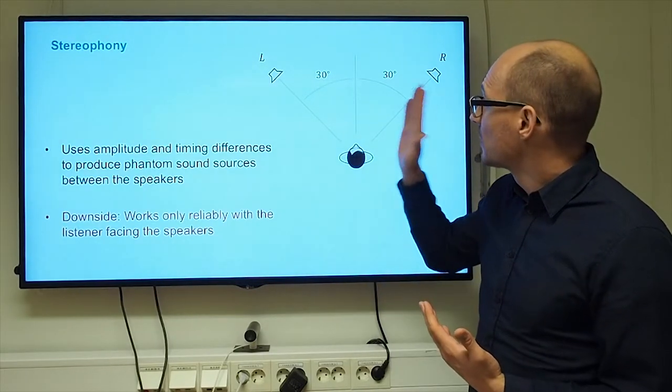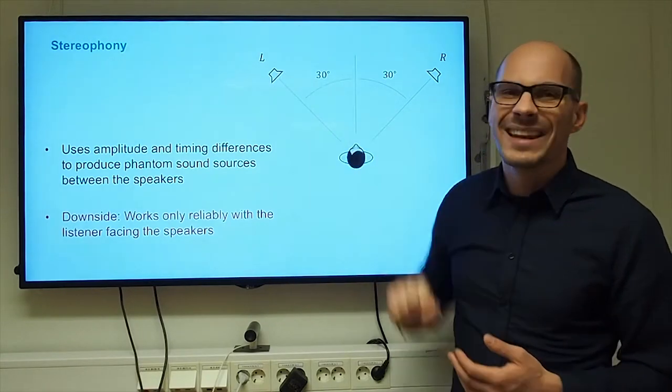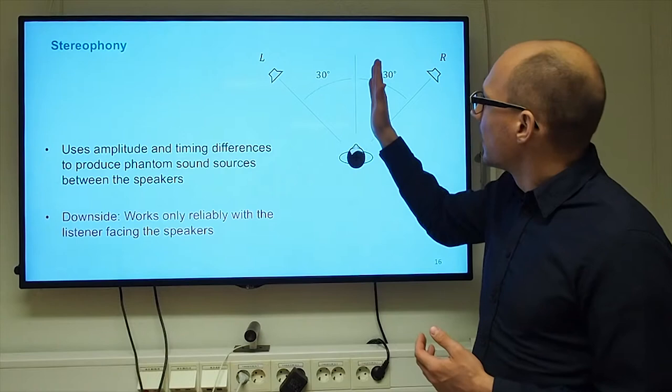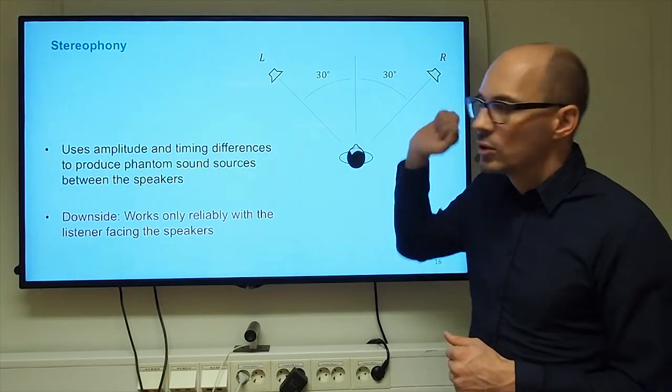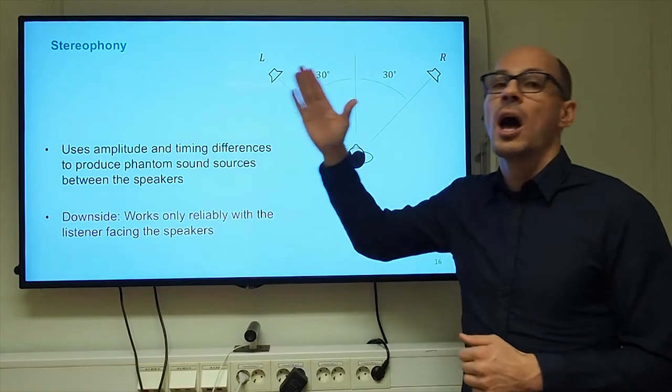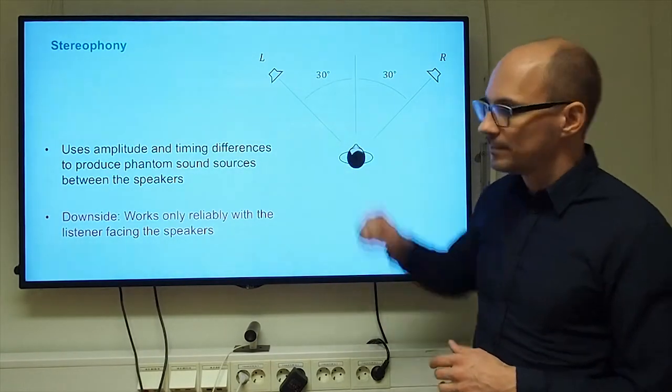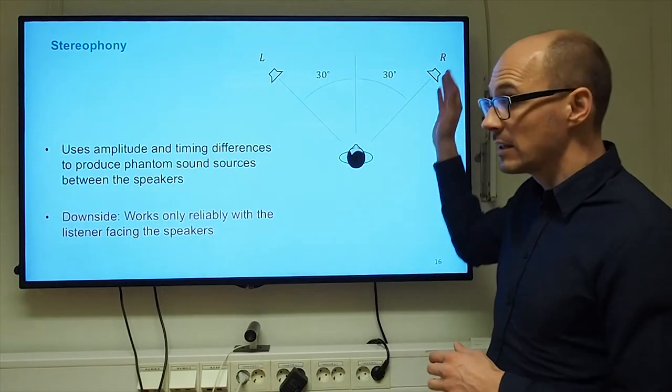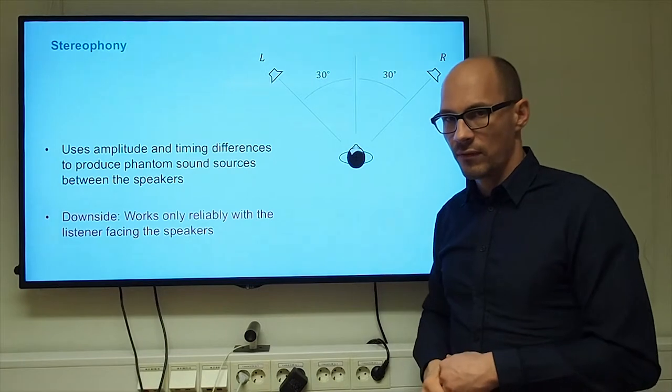So for example, if you keep the timing synchronized, so both loudspeakers play at the same time and you increase, say, the level of the left loudspeaker, then the higher the level will be, the more will a user localize a sound source towards the left loudspeaker. So any angle is possible and similarly, if the right loudspeaker plays louder, then the user will hear the sound source further to the right.